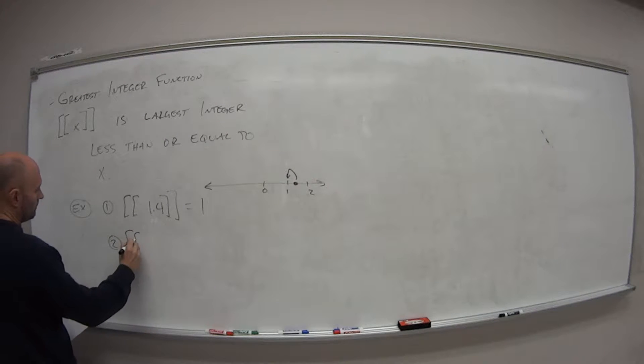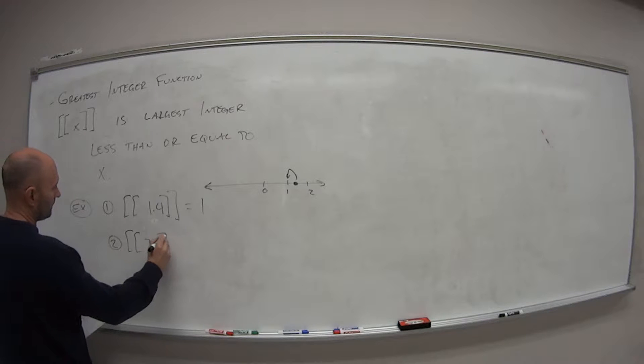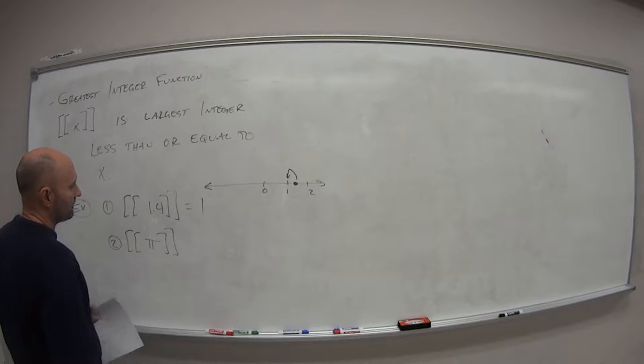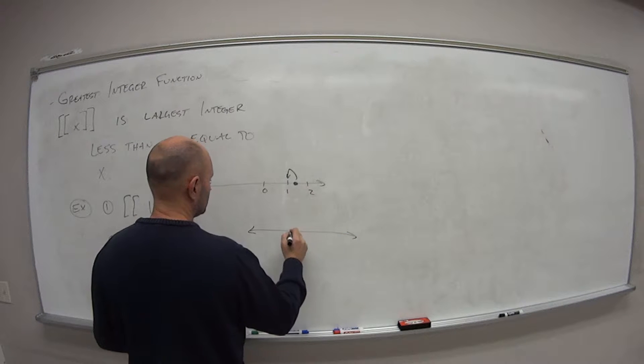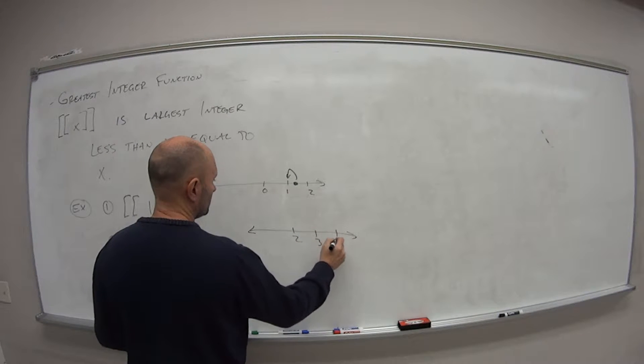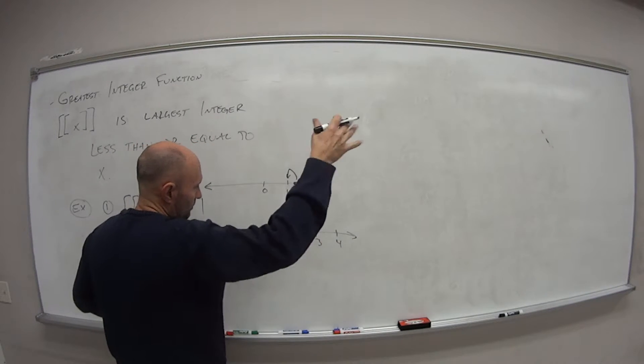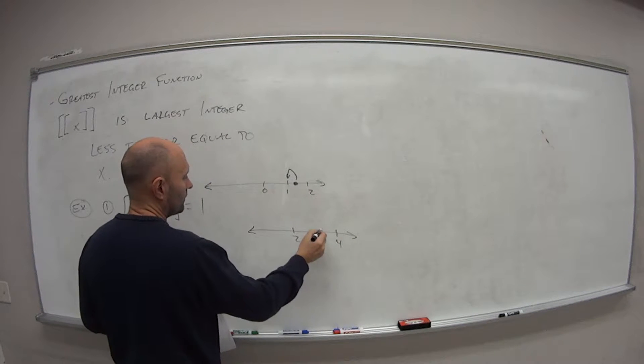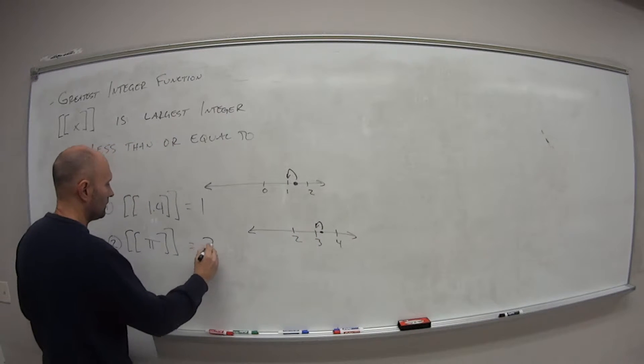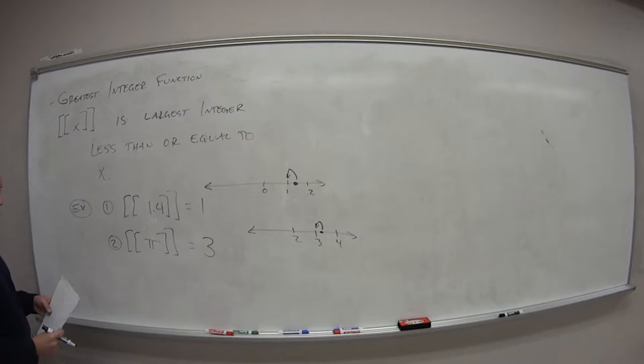The second one, greatest integer of pi. Well, again, on a number line, pi is 3.14 and so on. So somewhere here. So I go to the left to the first integer I hit, which is going to be 3.